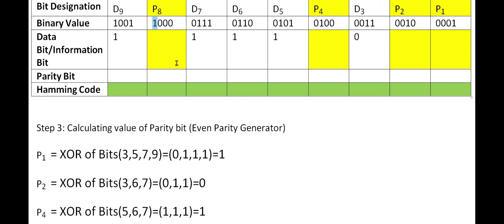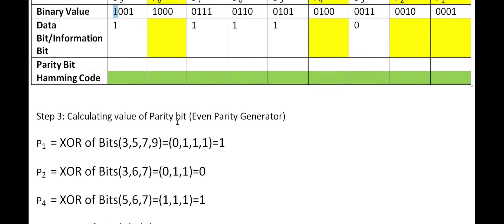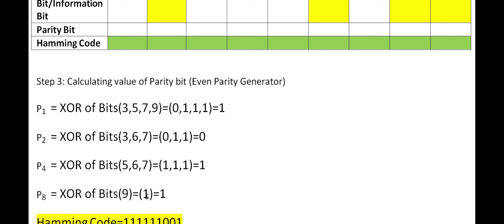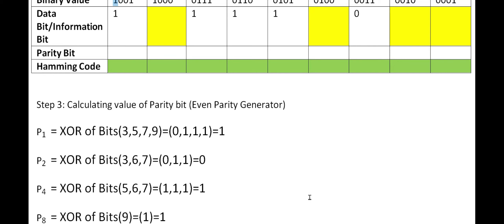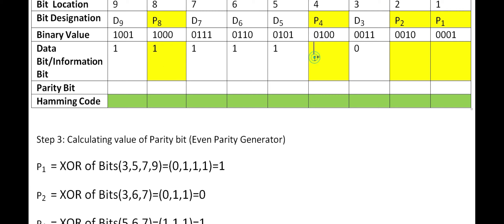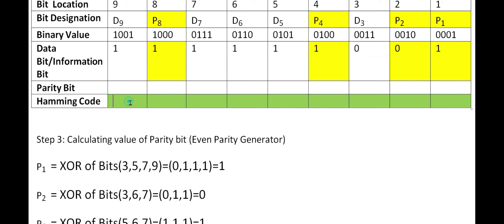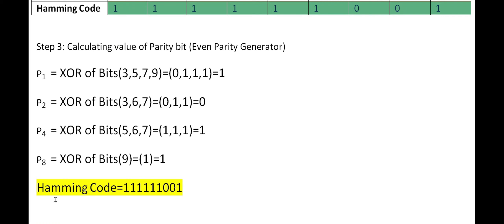For P8, we consider bits having 1 in the MSB position. Only position 9 has 1 at the MSB, with value 1. To make it even parity, P8 = 1. Now placing the parity bits in their positions — P1=1, P2=0, P4=1, P8=1 — the final hamming code is 110111101. This completes the encoding.